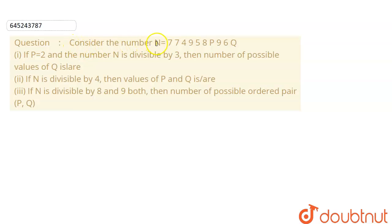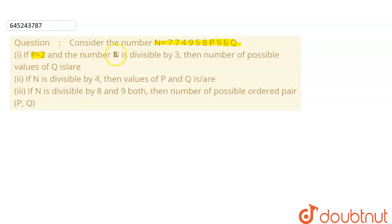The question is: consider the number N equal to 774958p96q. We are given three parts where we are to find the value of p and q. The first part is: if p is equal to 2 and the number N is divisible by 3, then the number of possible values of q are?